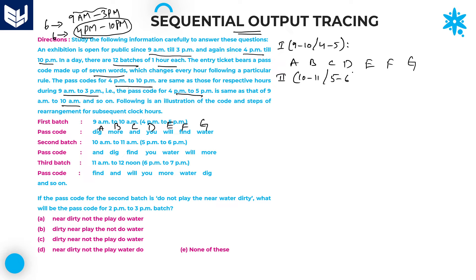For the second batch — that is 10 to 11 and 5 to 6 — the passcode is derived by a rule. Writing it down: End = C, Dig = A, Find = F, U = D, Water = G, Will = E, More = B.